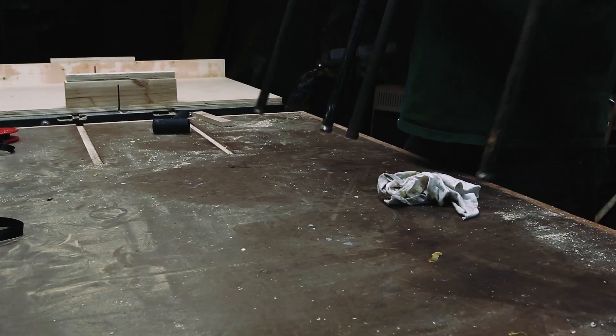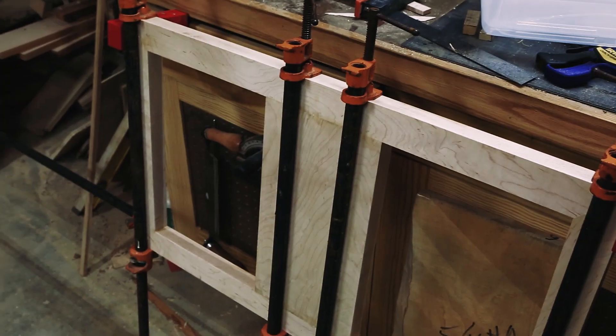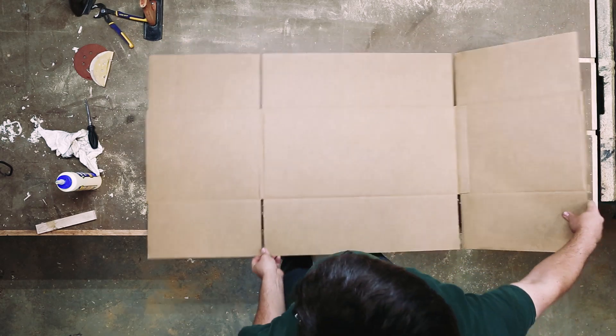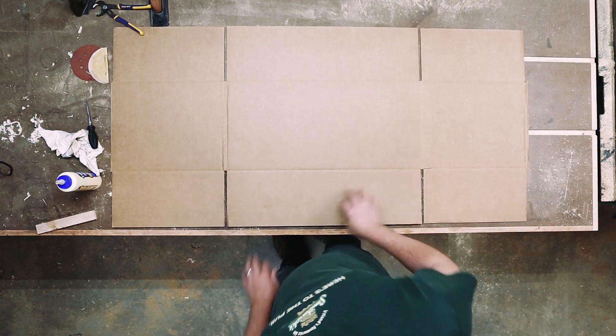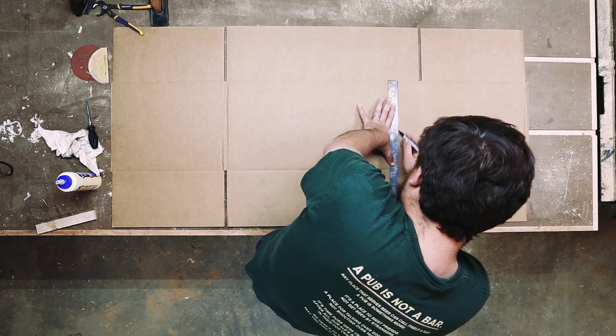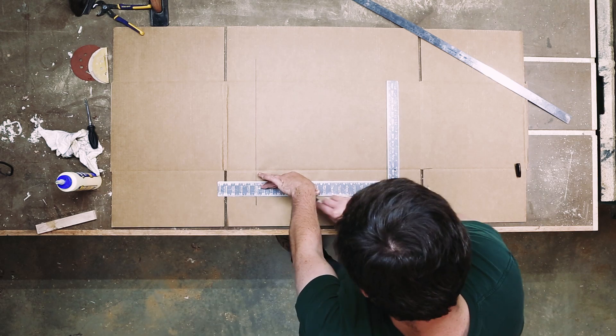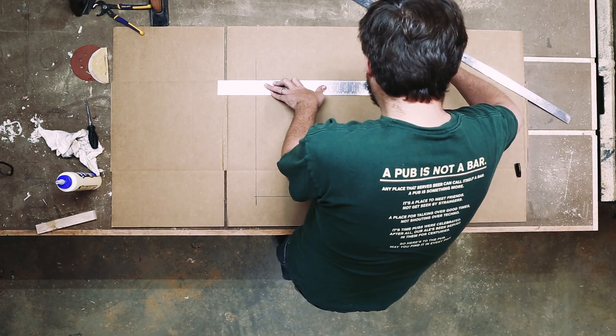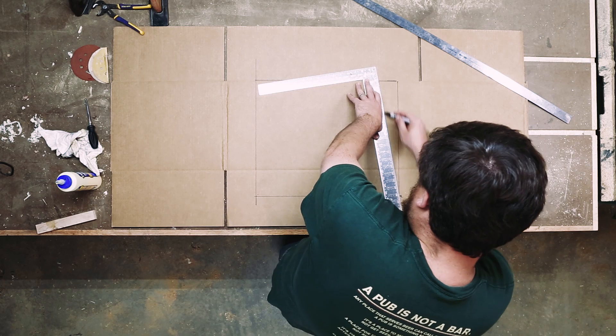Part two. I really wanted to splay the legs to make it more stable for a teetering toddler, so I needed to figure out how to make angled mortise and tenons. I took a piece of cardboard, decided on a two on twelve pitch, and drew a template to scale to help with the measurements.